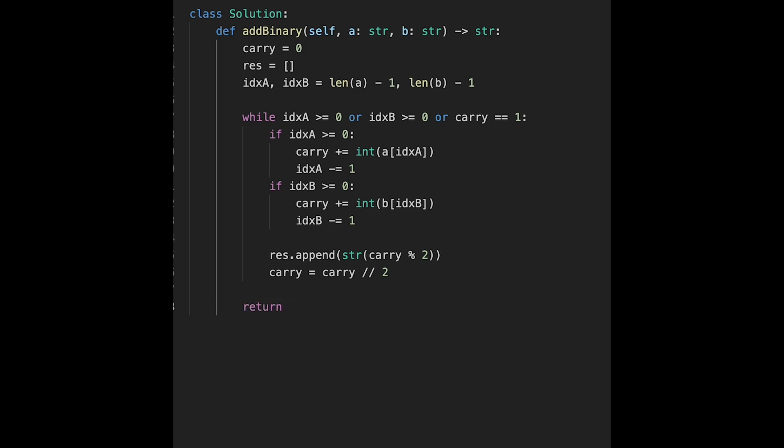And then at last, return. So we connect all values in this with no empty, dot join. And we should reverse our result variable, so res and colon colon minus 1. Yeah, that's it. So let me submit it. Yeah, looks good.